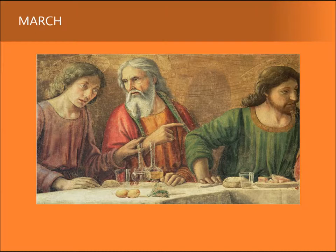Ghirlandaio, renowned for his lively figures, invests this scene of a shared meal with fine descriptive passages of everyday life. The Apostles, as we see in this detail, react to the moment of betrayal with a variety of well-observed actions. Gestures intended to individuate each Apostle's reaction to the words of betrayal signal to the viewer a range of emotions. The youthful Apostle at the left places a hand in a respectful gesture on the arm of his much older companion beside him. This action juxtaposes the old man's confusion with the younger man's dawning understanding.